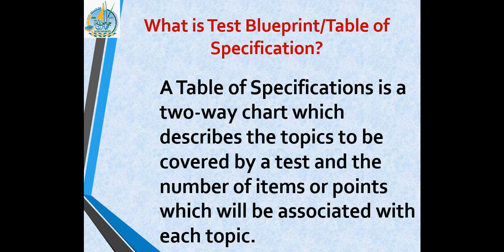What is the blueprint or table of specification? A blueprint or table of specification is a two-way chart which describes the topics to be covered by a test and the number of items or points which are associated to each topic.